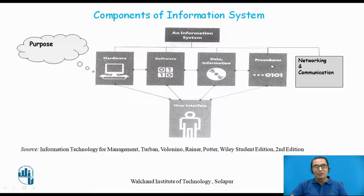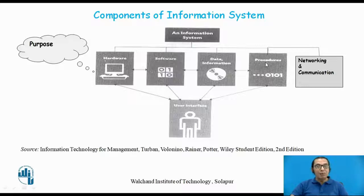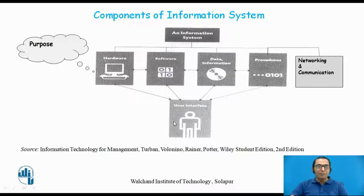There are certain procedures and processes which need to be followed in an information system, and those come under the banner of procedures. The different components or building blocks are connected to each other — they may exist in the same campus or all over the world — and these subsystems are connected using networking and communication devices. The internet is one of the major networking tools used. There is also something called a user interface. The information systems are made to help people, and people interact with the system through what is called the human or user interface, which includes different GUIs for desktop, laptop, or mobile views.